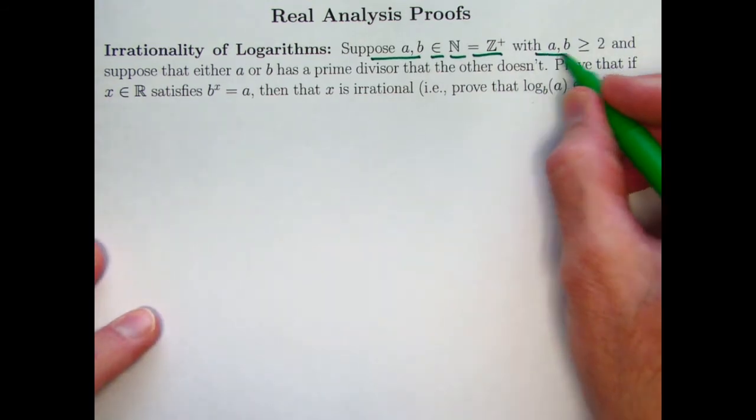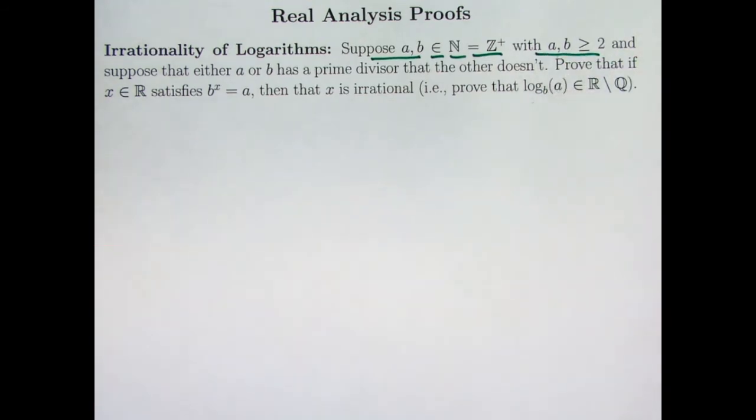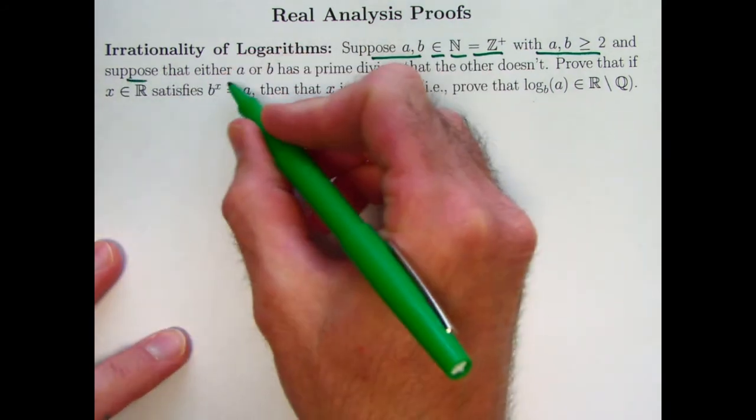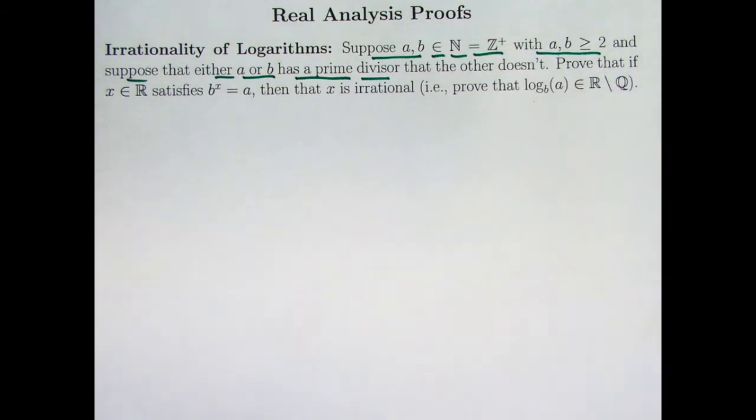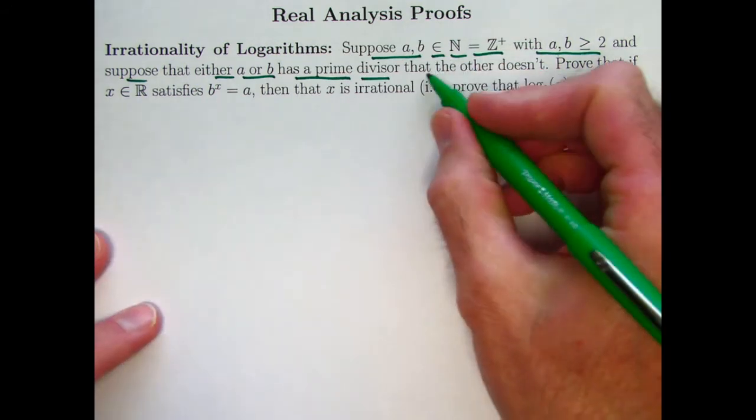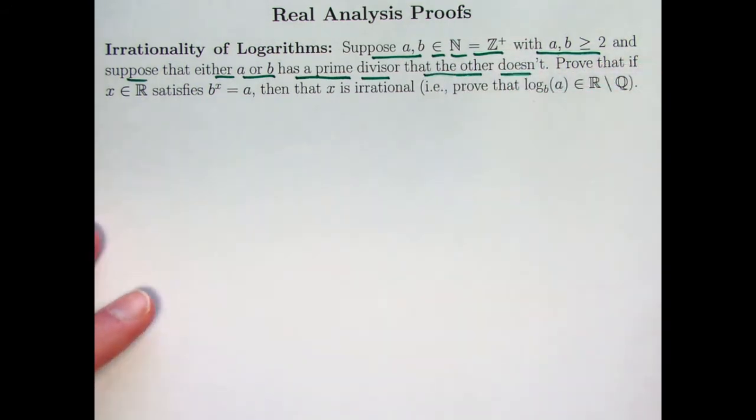I'm going to assume that a and b are both bigger than 1. They are greater than or equal to 2. And I'm going to suppose an extra assumption that either a or b has a prime divisor, also known as a prime factor, that the other one doesn't. One of them has a prime divisor, but the other doesn't.